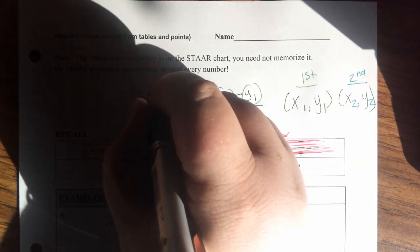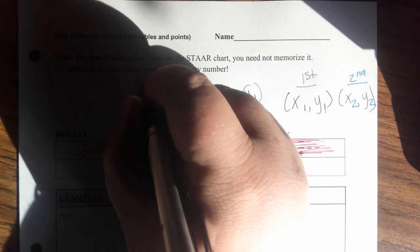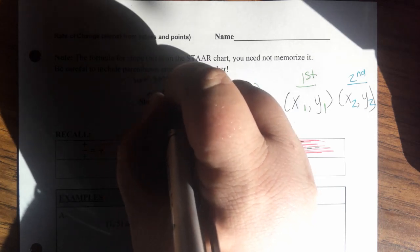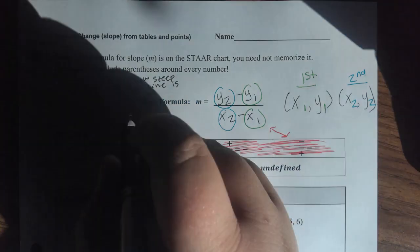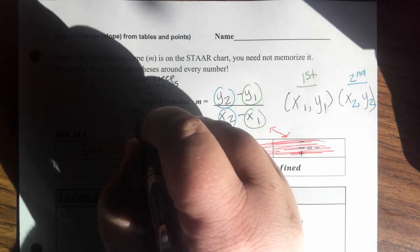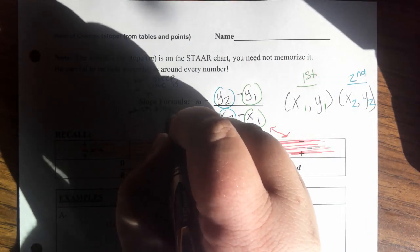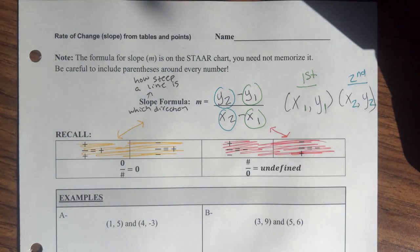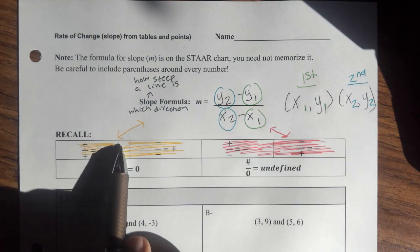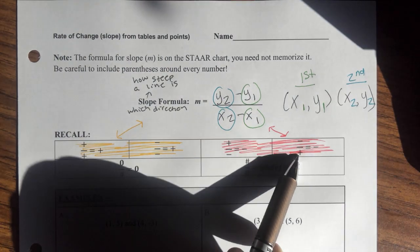So when I talk about how it's traveling or how it's changing over time, going up or going down, that is the slope. Slope tells us how steep the line is. And it also tells us which direction the line is going. So if it's a positive slope, it goes up. If it's a negative slope, it goes down.